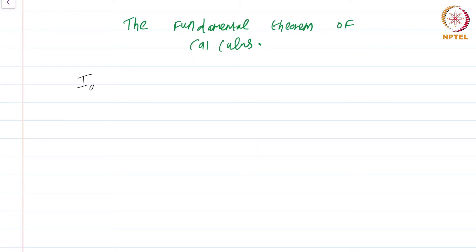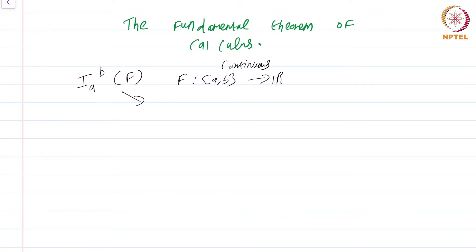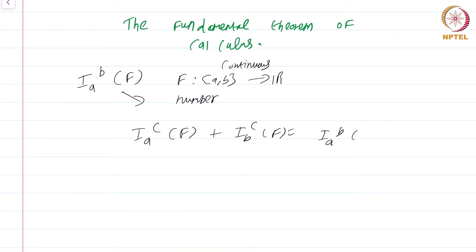Recall that in the very first module we had considered a function of the form i_{a,b}(f) that associates with a function f from [a,b] to ℝ — a continuous function — and i_{a,b}(f) is a function defined on continuous functions that assigns a number. This number satisfies two properties: the first is that i_{a,c}(f) + i_{b,c}(f) = i_{a,b}(f) where a < c < b.